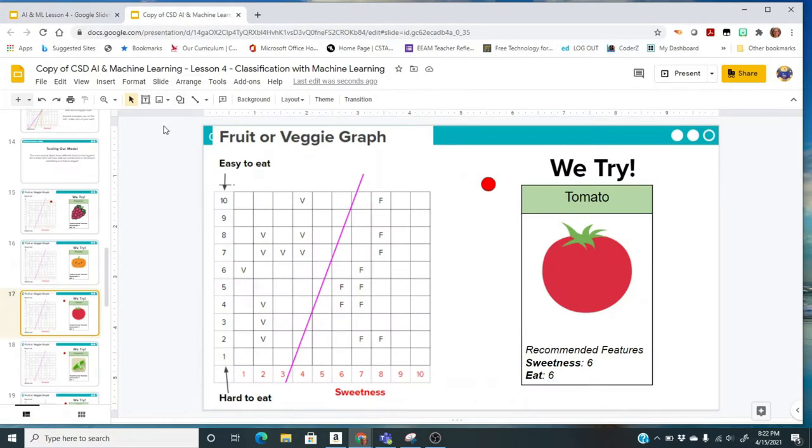The next one we're going to try is a tomato. I think everybody's probably tasted a tomato before. You can decide on your own number for sweetness and for eat. The recommendation is 6 and 6. I would come here and it falls just barely, but it falls in fruit.